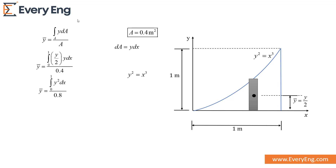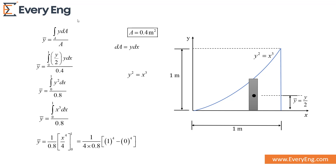Putting the value of y² = x³ into the centroid equation and solving the integration from 0 to 1 with the upper and lower limits substituted, we get the centroid from the x-axis equal to 0.3125 meters.